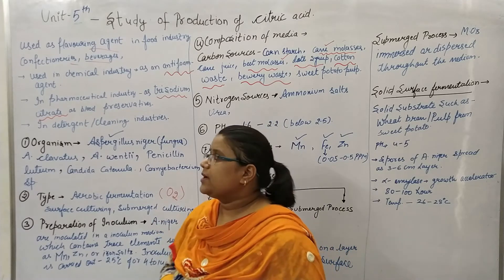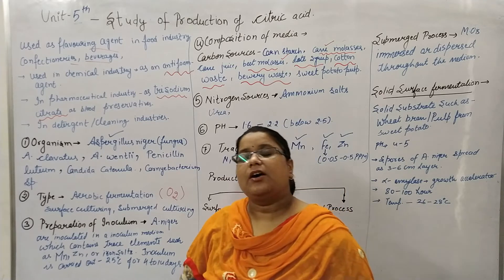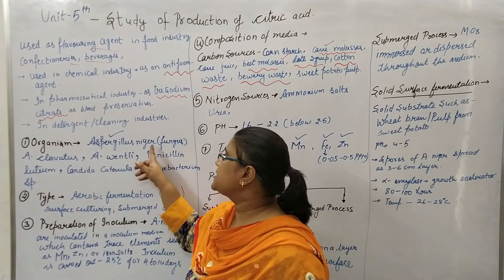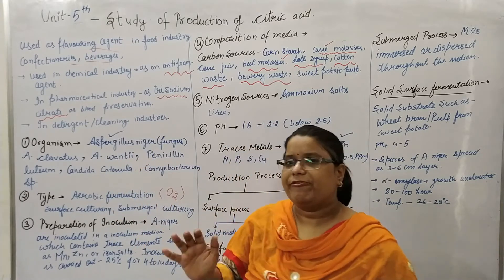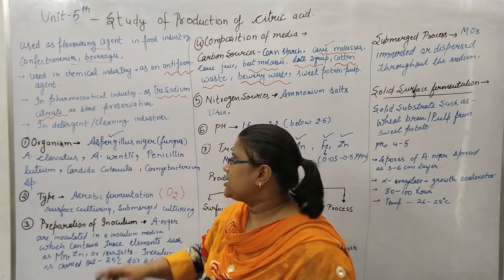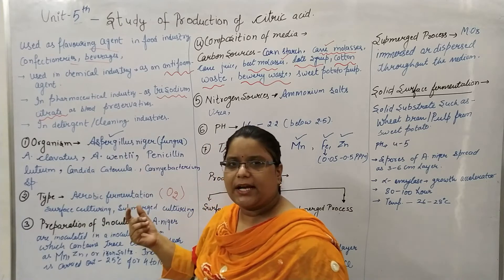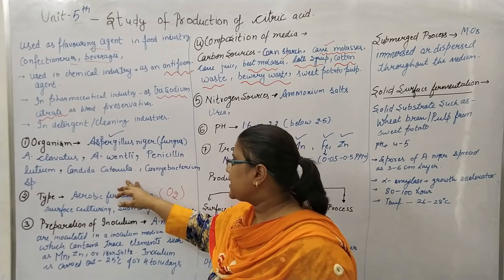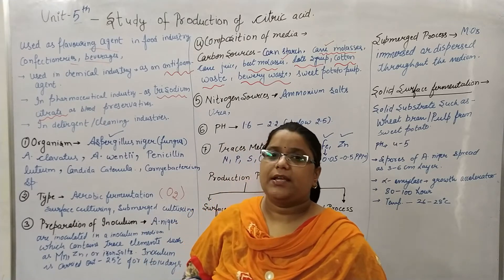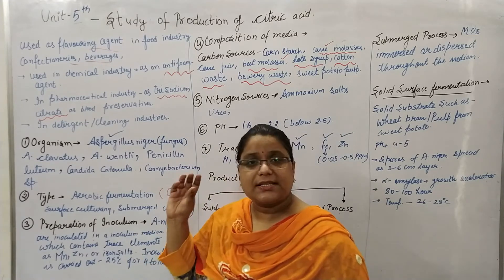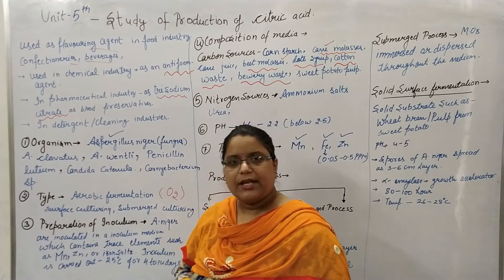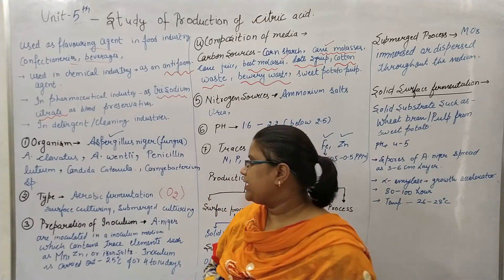Now, the organism used in citric acid production: mainly Aspergillus niger, which is a fungus, is preferably used. Different varieties like Aspergillus clevitus, Aspergillus venti, Penicillium luteum, Candida catenula, and Corynebacterium species are also used, but Aspergillus niger is the preferred organism. Citric acid production is an aerobic fermentation, and both surface culturing and submerged culturing are used.